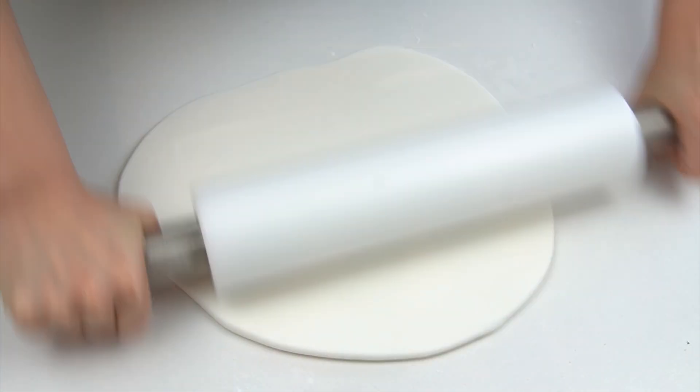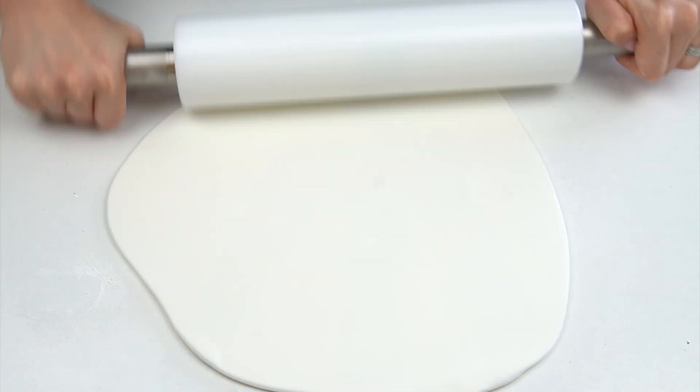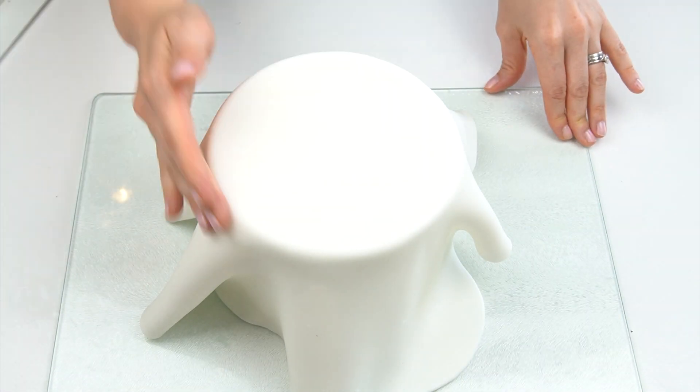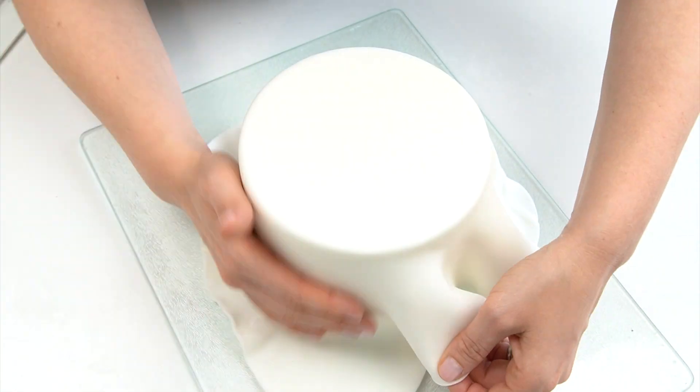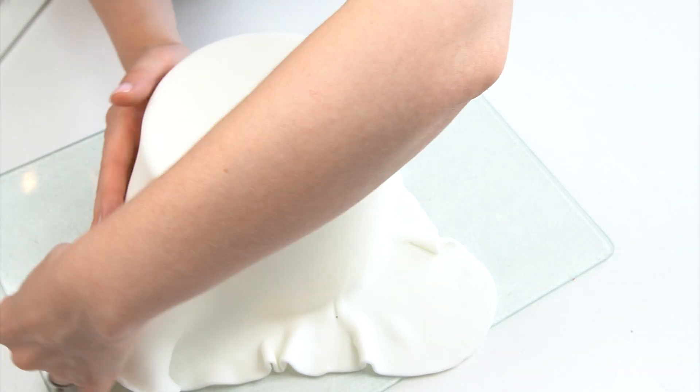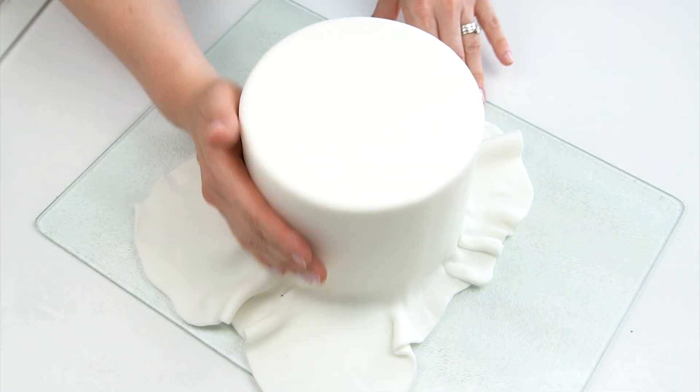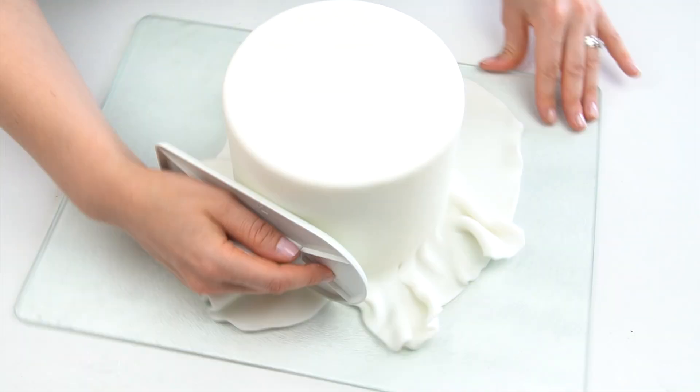Okay let's get started. I'm going to start by covering my cake in a layer of fondant. I've got a six inch cake here and I'm actually using a dummy cake for this tutorial. I'm using white fondant but you can color your cake any color you'd like depending on the theme of your cake.